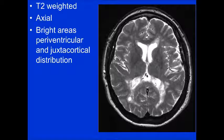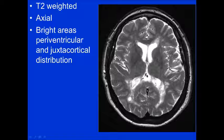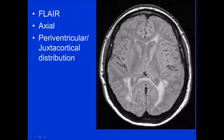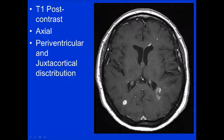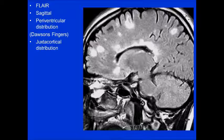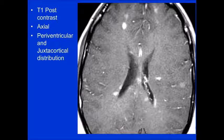On T2-weighted images you see bright areas periventricularly and juxtacortically, along the atria and the optic radiations. On the FLAIR, you see lesions periventricularly posteriorly and in juxtacortical frontal lobes. When contrast is given, the enhancing areas are periventricular and juxtacortical — these are the active areas of demyelination. On sagittal FLAIR, the periventricular distribution — Dawson's fingers — is classic for MS. Post-contrast images on different patients demonstrate enhancement in juxtacortical and periventricular locations.